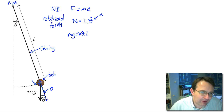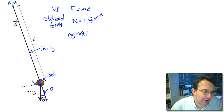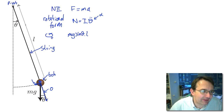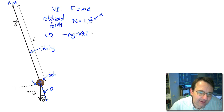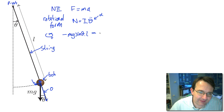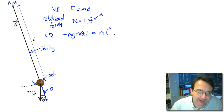We need to define a positive direction for moments. Since we've displaced through angle theta in one direction, anti-clockwise will be positive. The perpendicular component of weight generates a clockwise moment — it's trying to make the mass move back — so this moment is negative. This equals the moment of inertia times angular acceleration. The moment of inertia of a point mass is m times its distance from the pivot squared, so that's mL². Multiplying by theta-double-dot, we can cancel m from both sides and one factor of L, giving us our equation.